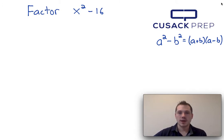Now, x squared and 16 are both perfect squares, and there's a minus sign in between them. That means that we can factor this using the difference of squares formula, which I have presented here on the right.